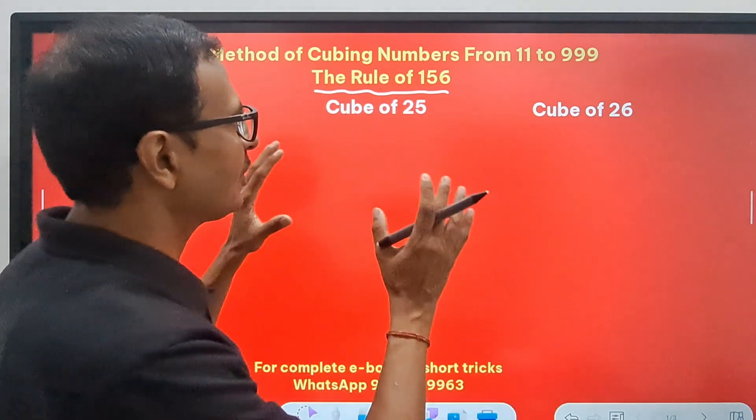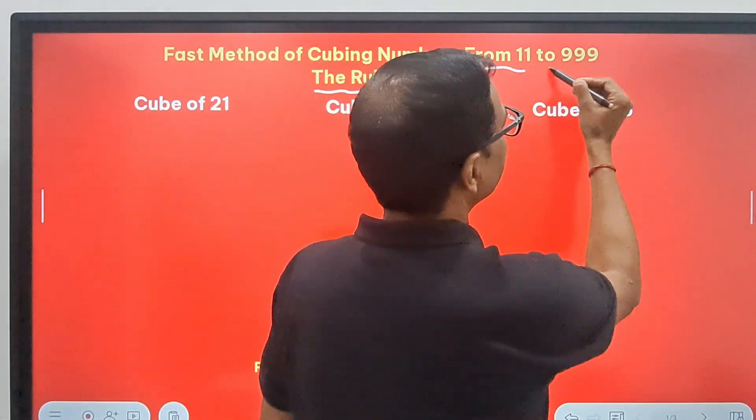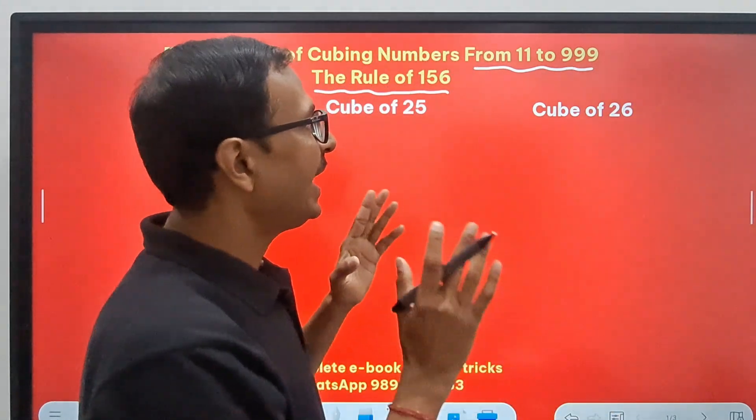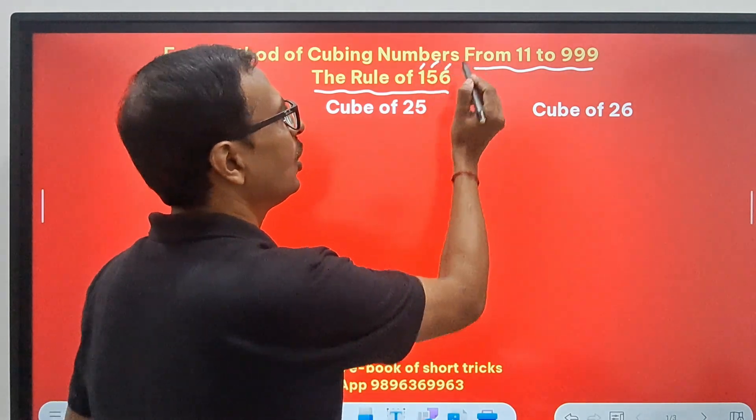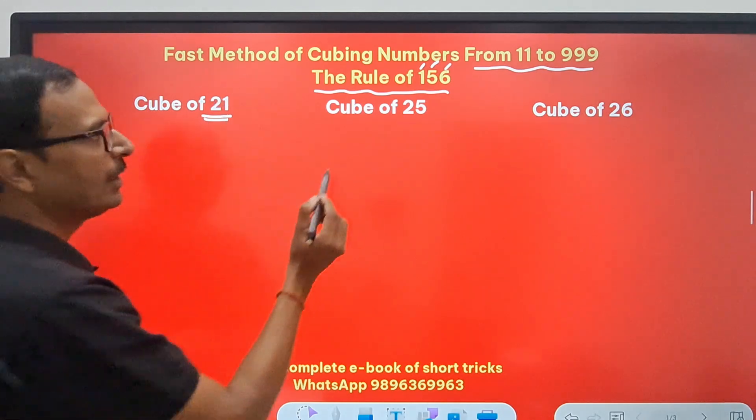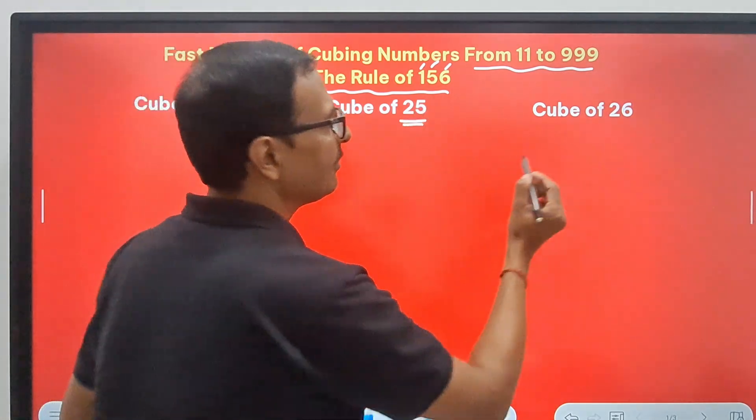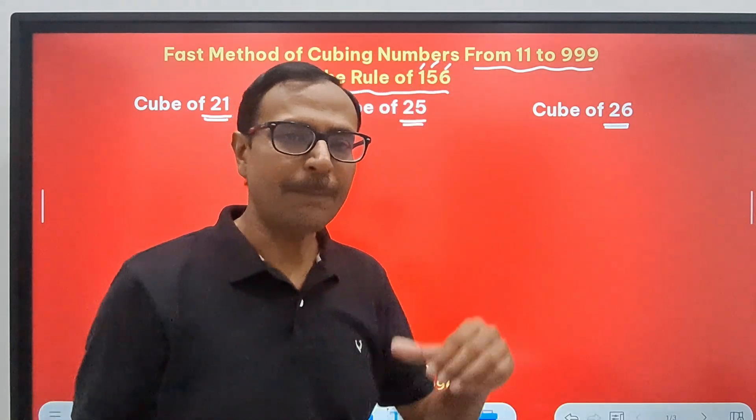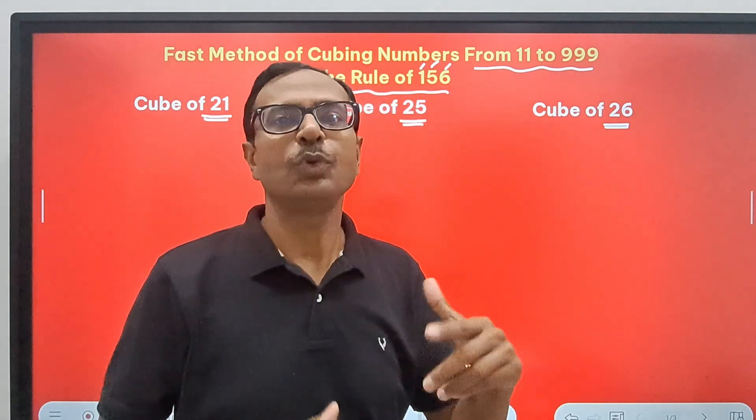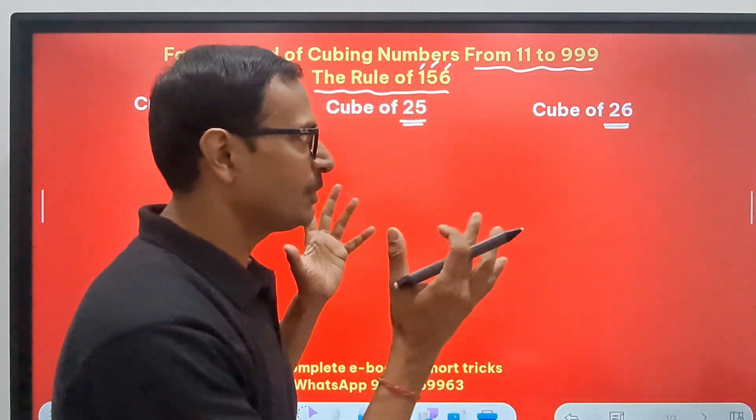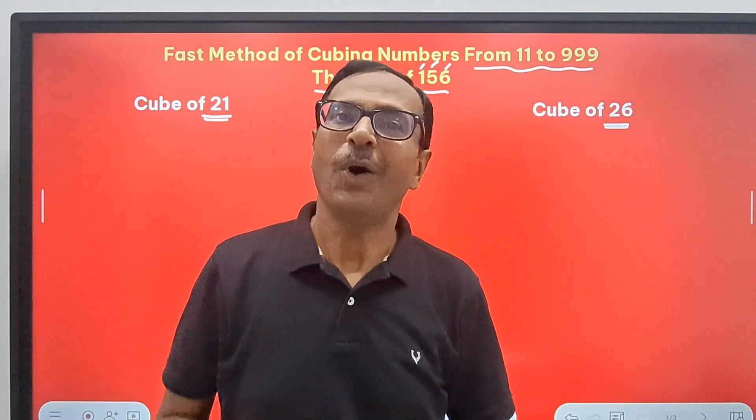What does 156 mean? It means that all those numbers from 11 to 999, that is 2-digit numbers and 3-digit numbers which end with either 1 or 5 or 6. You can see I have taken a basic example here: 21 ends in 1, 25 ends in 5, and 26 ends in 6. The rule of 156 can be applied to all the 3 numbers to find the cube. Watch the entire video. I am going to take up huge numbers, 3-digit numbers also, and find the cube of those numbers easily.